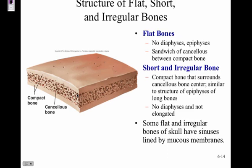Flat bones have no diaphysis or epiphysis — they are basically a sandwich of cancellous bone in between layers of compact bone, with the spongy bone filled with red bone marrow. Short and irregular bones have compact bone surrounding a cancellous bone center — there's always spongy bone in the middle. Some flat and irregular skull bones also contain sinuses, which are large cavities lined by mucous membranes, forming the nasal sinuses.